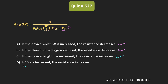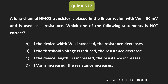The fourth statement says: when VGS increases, the resistance also increases. Let us check — when VGS increases, (VGS − VT) also increases, and due to that RDS(on) will reduce. So the fourth statement is incorrect. Out of the four statements, A, B, and C are correct, while D is incorrect. Therefore, D is the answer — the statement that is not correct.